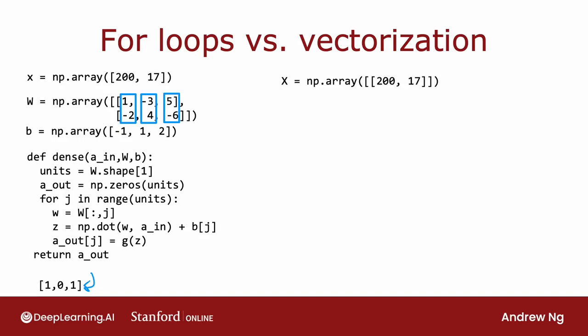Set X to be equal to this. Notice the double square brackets - this is now a 2D array, like in TensorFlow. W is the same as before. And B, I'm now using capital B, is also a 1 by 3, 2D array.